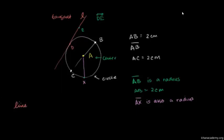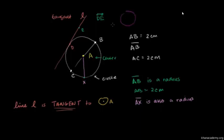Line L is tangent to the circle centered at A. This tells us which circle we're talking about — because maybe we had another circle centered at M. We have to specify: it's tangent to this one. The circle symbol with a dot in the middle tells us we're talking about a circle centered at point A. I want to be very clear: point A is not on the circle. Point A is the center of the circle. The points on the circle are the points equidistant from point A.